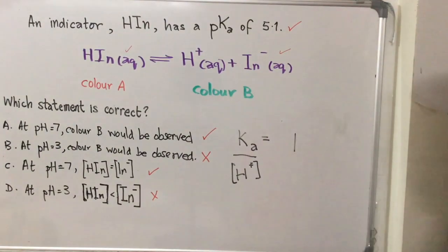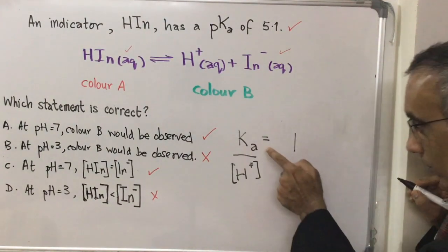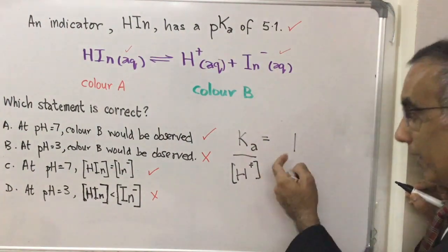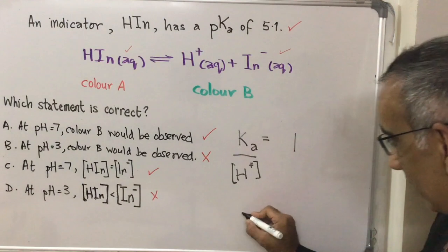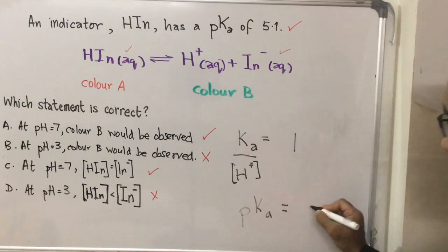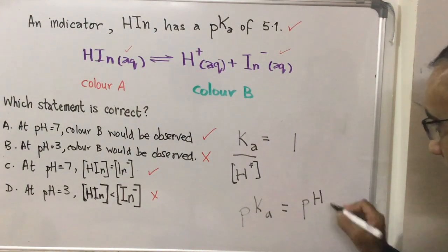And then if these two are equal this side is one and then Ka is equal to H+ and then we could also say that the negative log to the base 10 of Ka, pKa, would be equal to the negative log to the base 10 of H+, pH.